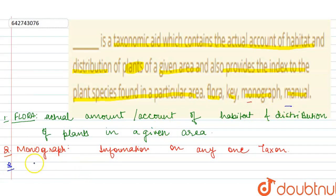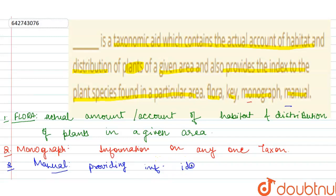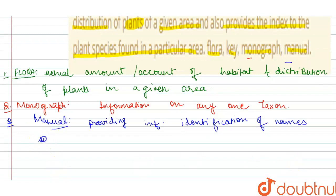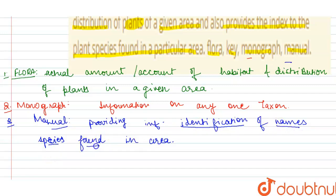The third option is manual. Manuals are basically useful in providing information regarding the identification of names of species found in a particular area. So manuals provide information regarding identification of the names of the species found in a particular area.